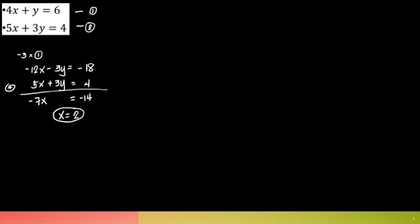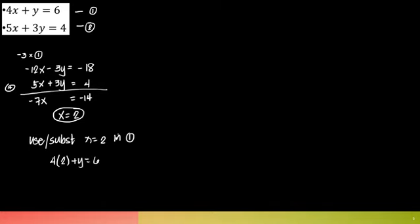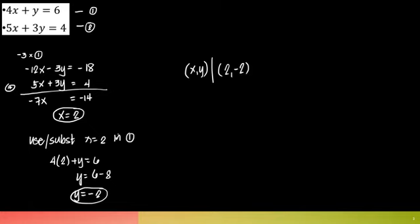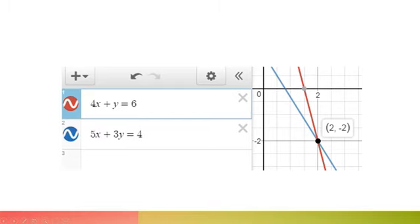Now that I already have my x, since this is a system, you have to also get the y value. It might be easier to plug in x equals 2 in equation number one. So 4 times 2 plus y equals 6, or y equals 6 minus 8, so y is negative 2. Since this is a system, your answer has to be in ordered pair: (x, y) is (2, −2). How would the graph look if you're asked to graph this? Using Desmos, 4x plus y equals 6 and 5x plus 3y equals 4 gives you two lines, and the intersection is (2, −2).